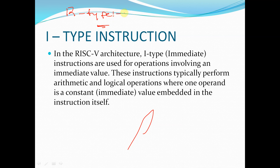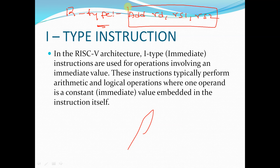In case of an add operation, the instruction will look like: ADD RD, RS1, RS2 — where RD is the destination register, RS1 is source register 1, and RS2 is source register 2. In these two registers the values will be stored.